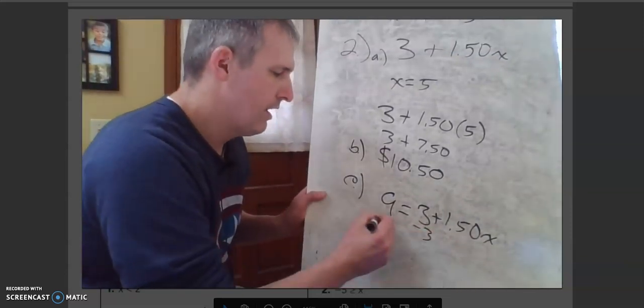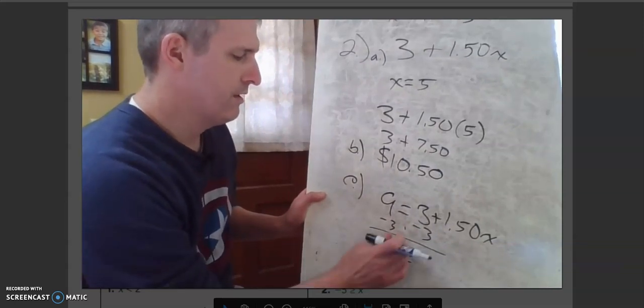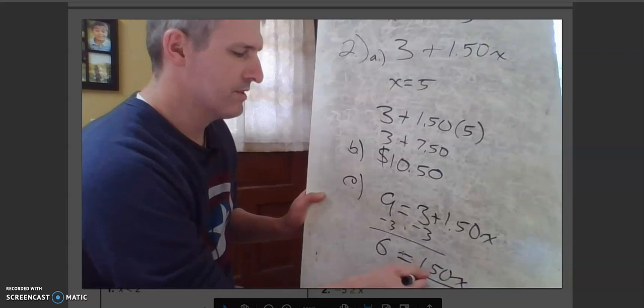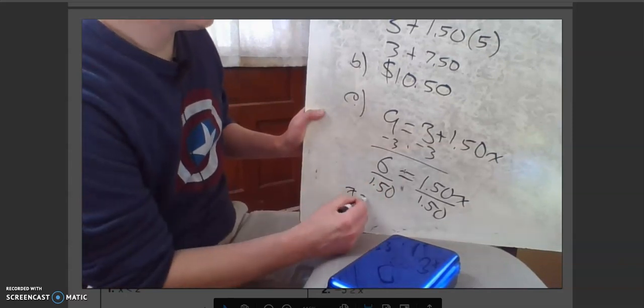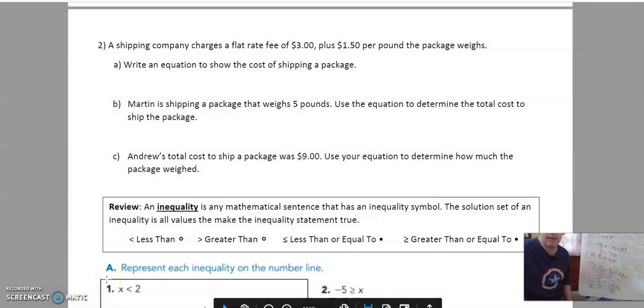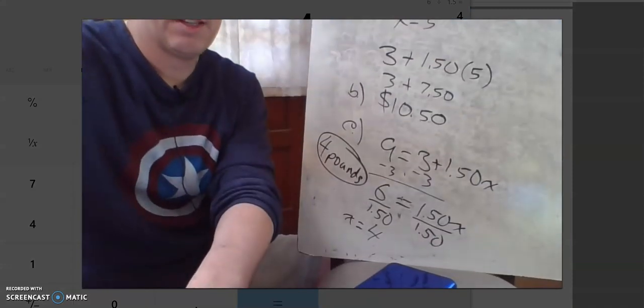So what we can do is take away this three dollars from both sides and we get six equals a dollar fifty x. And then to figure out what x is we need to divide both sides by a dollar fifty. And we get x equals six divided by a dollar fifty. Okay go to our calculator. Six divided by a dollar fifty and that gives him his four. So Andrew must have used four pounds. That's what his package weighed. All right so that's how we do those problems. Okay as you can see there four pounds.